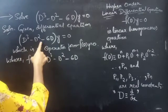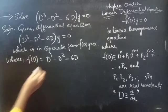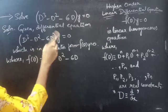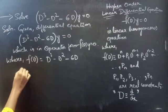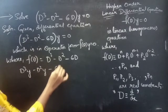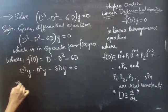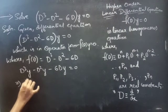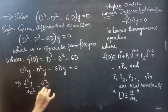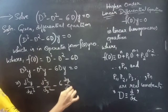Just by comparing these two equations, we will get f of d. Here you are having the equation d-cubed minus d-squared minus 6d into y. So you can write this as d-cubed y minus d-squared y minus 6dy equals to 0, which is d-cubed y by dx-cubed minus d-squared y by dx-squared minus 6 into dy by dx.